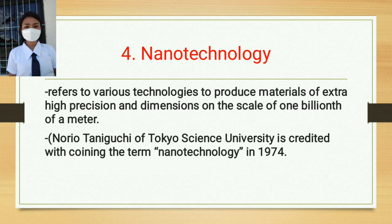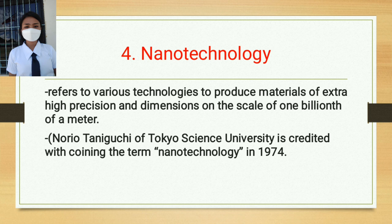Number four is nanotechnology. It refers to various technologies to produce materials of extra high precision and dimensions on the scale of one billionth of a meter. Nanotechnology is about producing materials that are accurate — the measurement is exact. Norio Taniguchi of Tokyo Science University is credited with coining the term 'nanotechnology' in 1974.